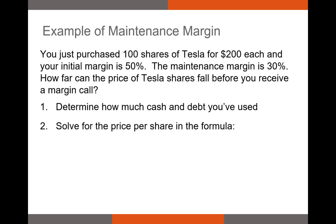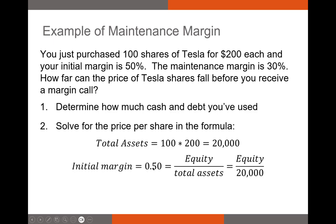Let me try one more example, because maintenance margin is an important topic — if you take the CFA exams, you will absolutely see this. You just purchased 100 shares of Tesla for $200 each, and your initial margin is 50%. The maintenance margin is 30%. How far can the share price of Tesla fall before you receive a margin call? Our total assets are $200 times 100 shares, so $20,000. With a 50% initial margin, we can solve for our equity and debt position.